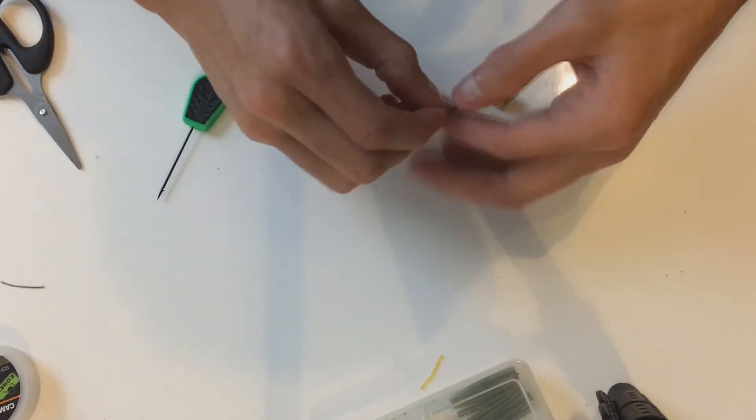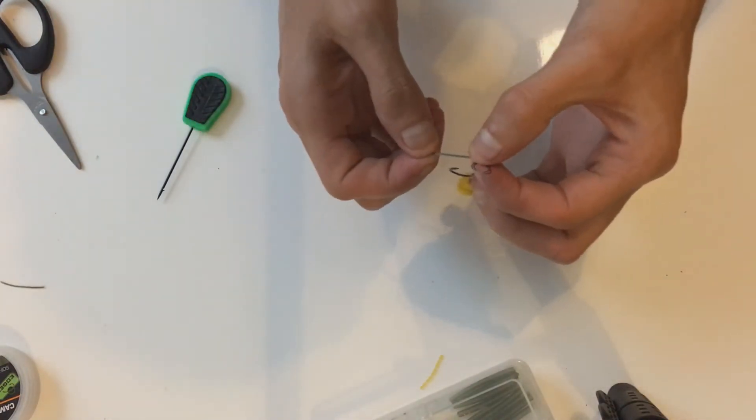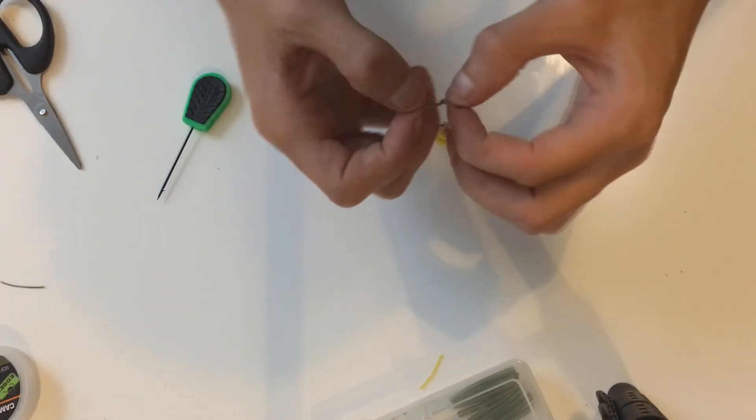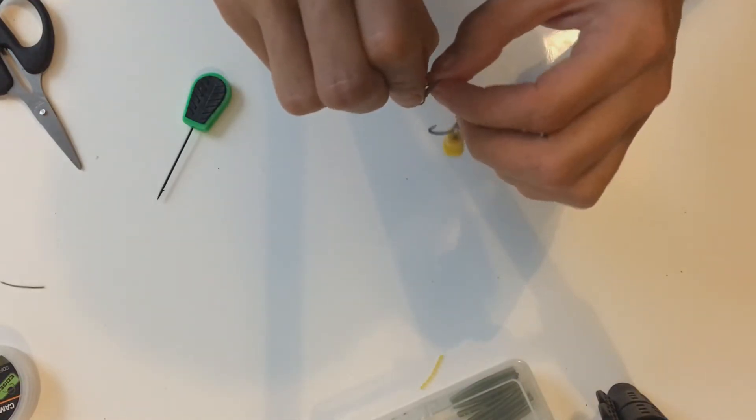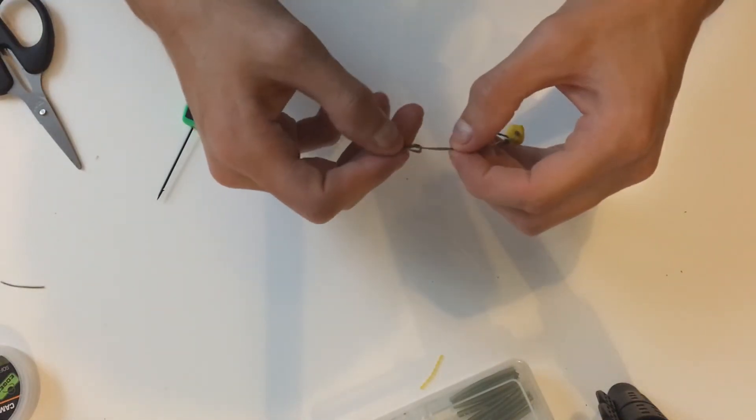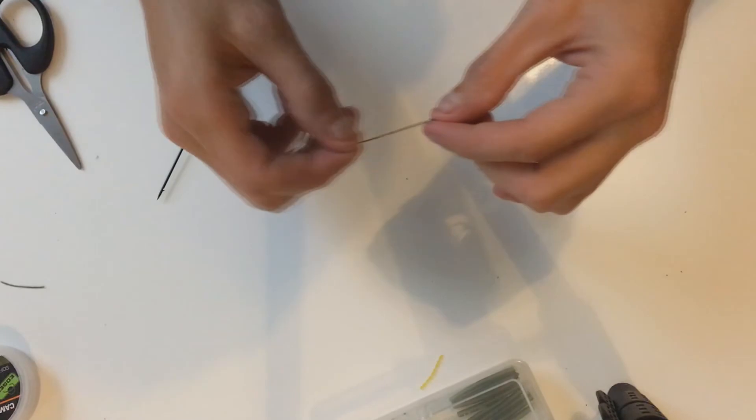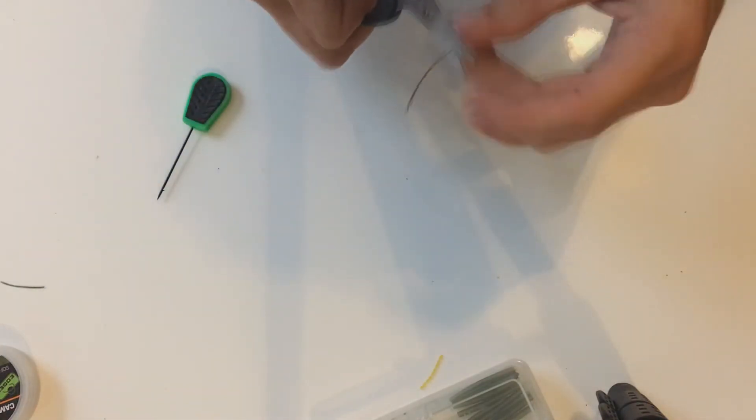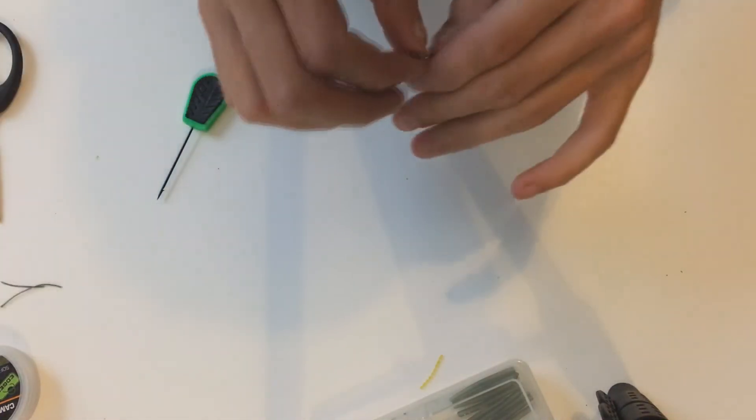So we're just going to tie a big overhand loop. But this time what we're going to do is we're going to go through the loop, it's the same as the hair rig, it's the same knot, and we're going to go through that twice this time like so. Slide the knot up a little bit and just pull that tight. Cut off the tag end again.